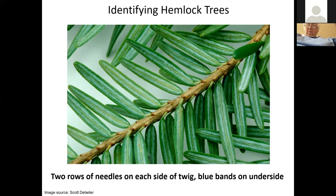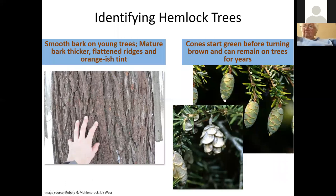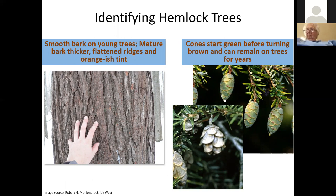In order to identify your hemlock trees, you're going to look for something that has two rows of needles on either side of a twig with blue bands underneath. You're also going to be looking at the bark of the tree — you'll find smooth bark on the younger trees, but the mature trees will get thicker bark with ridges and a kind of orangish tint on it. Throughout primarily Owen County, I see these fairly regularly. The cones will start to turn green before turning brown, and the cones can remain on those trees for years. I bet a lot of you have noticed these kinds of cones on different trees, so most likely you've seen hemlock on your property and may not have realized it.